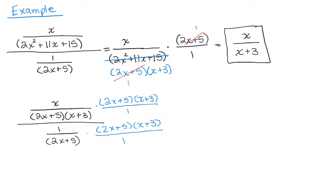And if I want, I can extend this all the way out if that helps you. So now, can I cancel anything? Yes. That's the whole point of multiplying by the least common multiple of all the denominators. The 2X plus 5 cancels here. And also, the X plus 3 cancels. And in the denominator, the 2X plus 5 cancels.